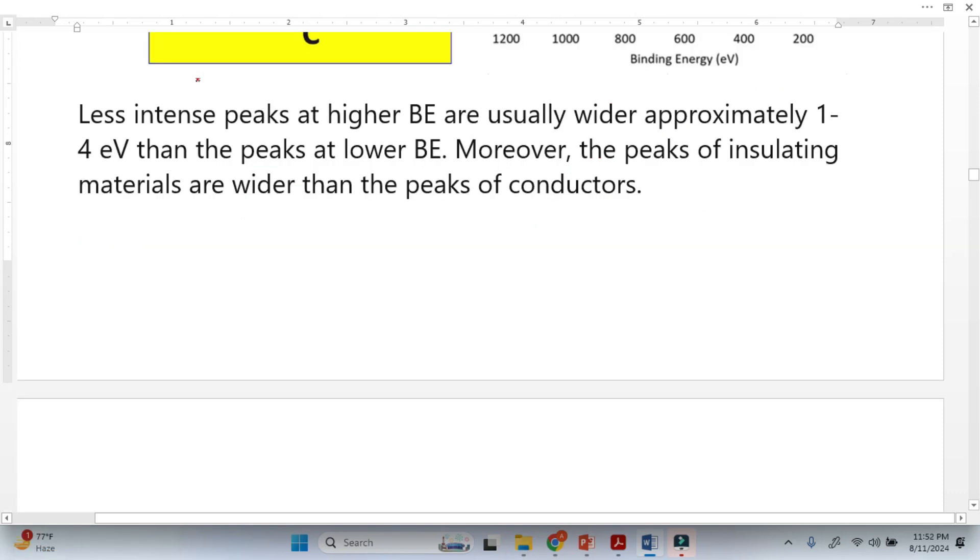Another important characteristic or property of the photoelectron peaks: the less intense peak at the higher binding energy usually wider, approximately one to four electron volts, than the peak at lower binding energy. For example, this is the binding energy here and the x-axis is from 0 to 1400 or 1200 electron volts.